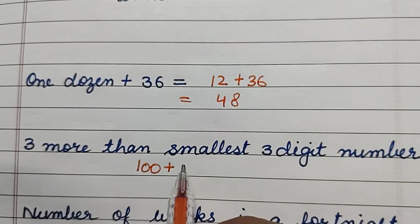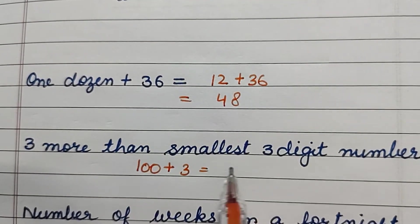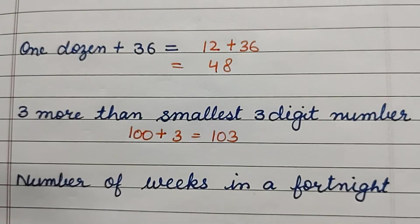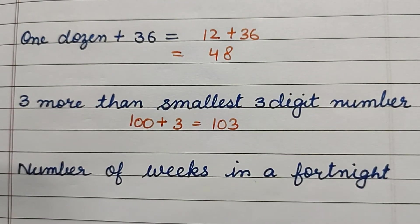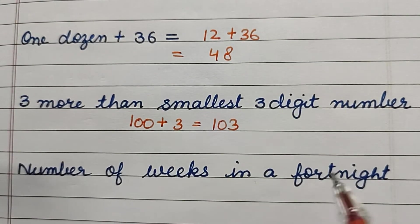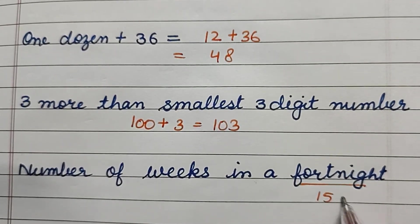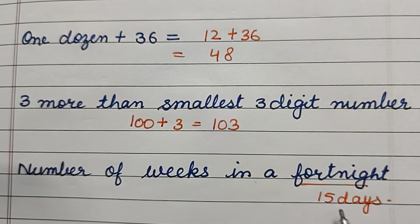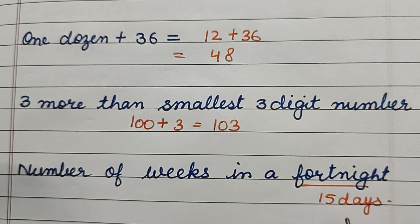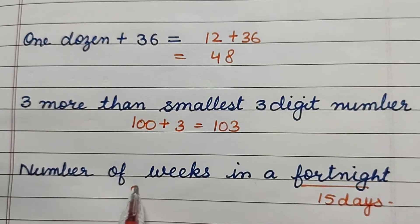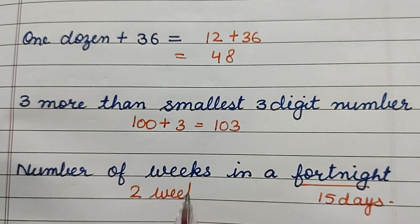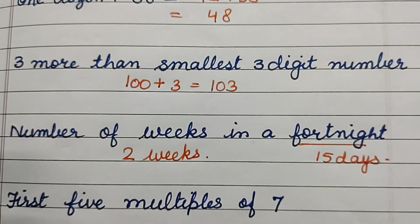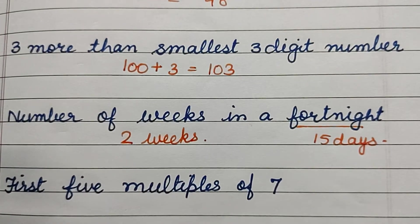than it is 100 plus 3, which is equal to 103. Now, number of weeks in a fortnight — fortnight means 15 days, and there are 2 weeks in 15 days, so 2 weeks is our answer.